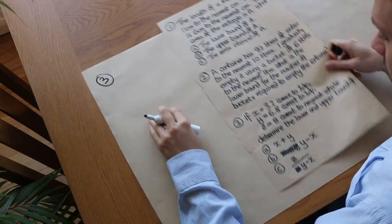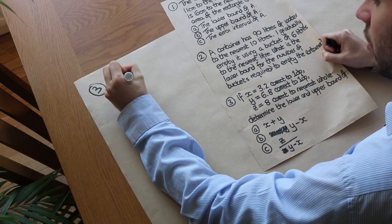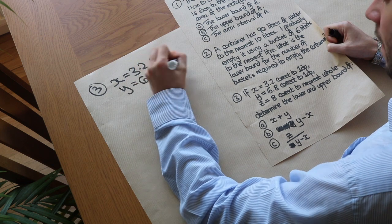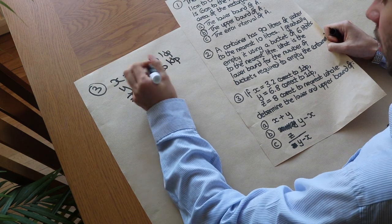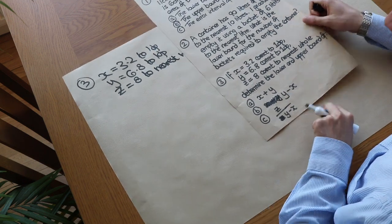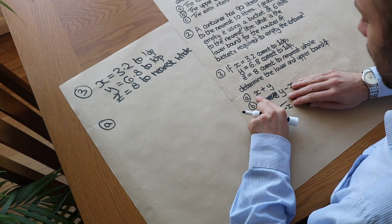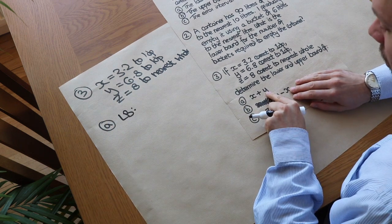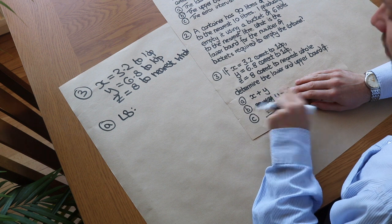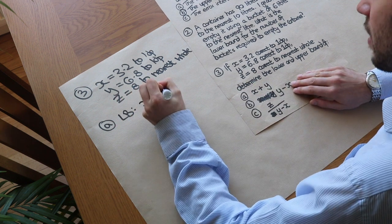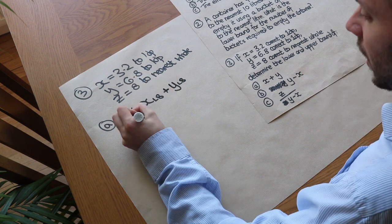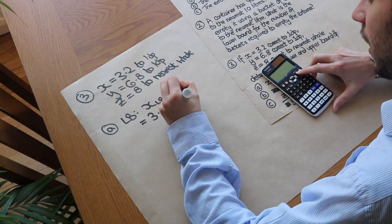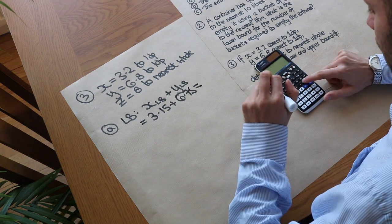Question 3: x is 3.2 correct to one decimal place, y is 6.8 to one decimal place, and z is 8 to the nearest whole number. We want the lower and upper bounds of various combined quantities. For the lower bound of x plus y, we add the smallest two possible values: the lower bound of x plus the lower bound of y, which is 3.15 plus 6.75, giving 9.9.